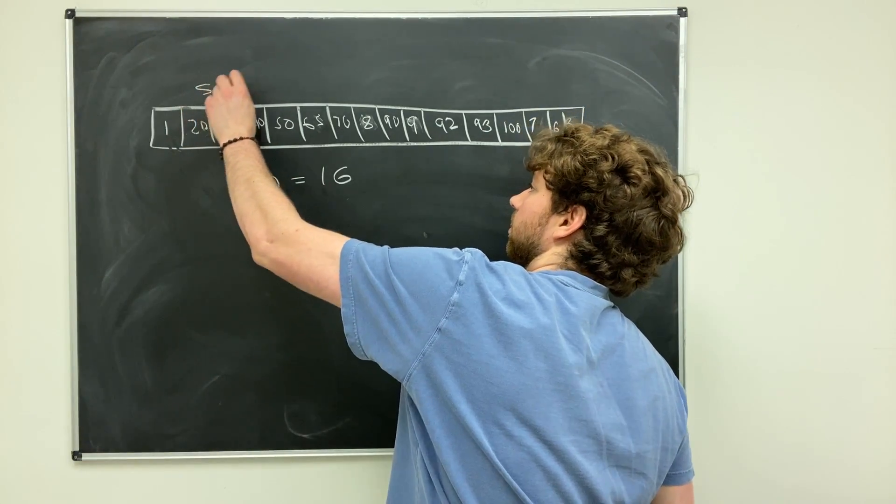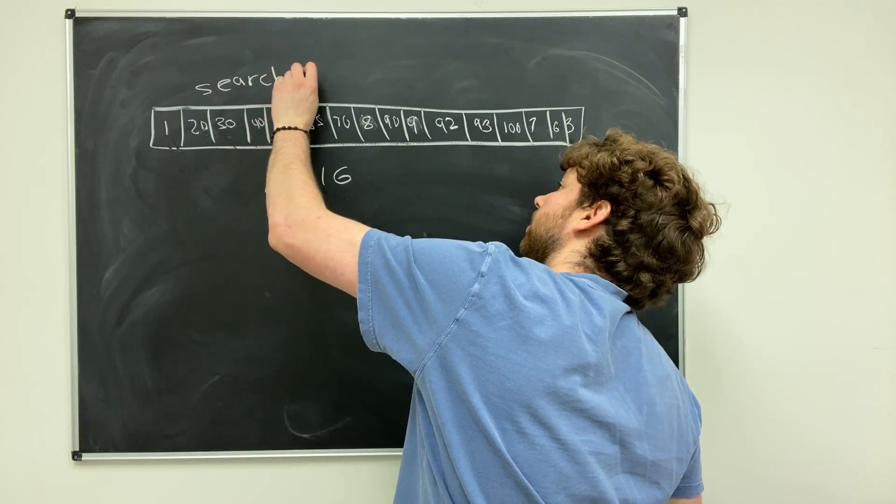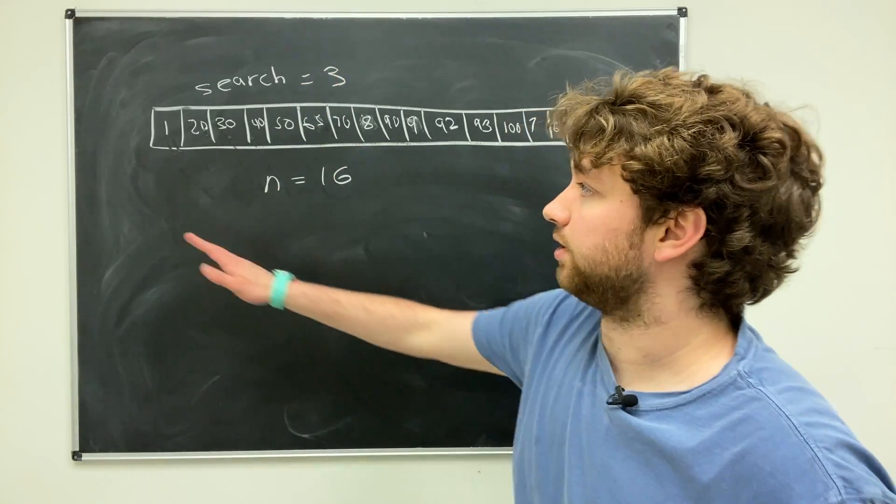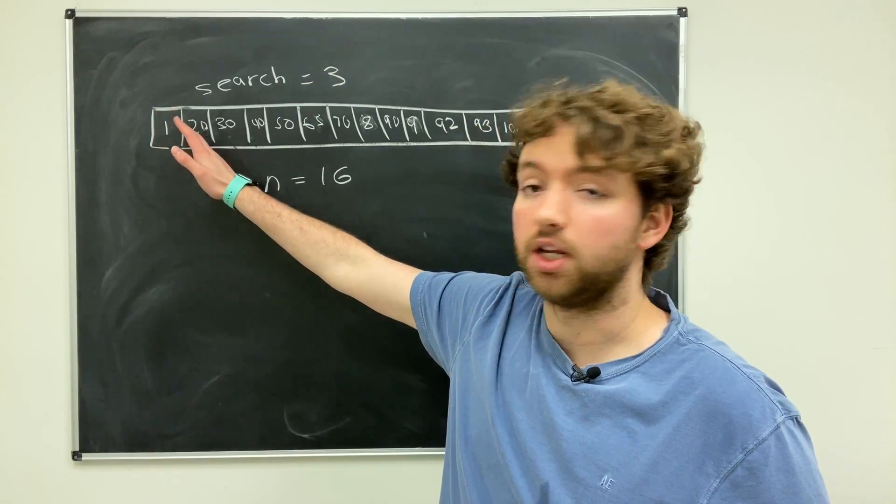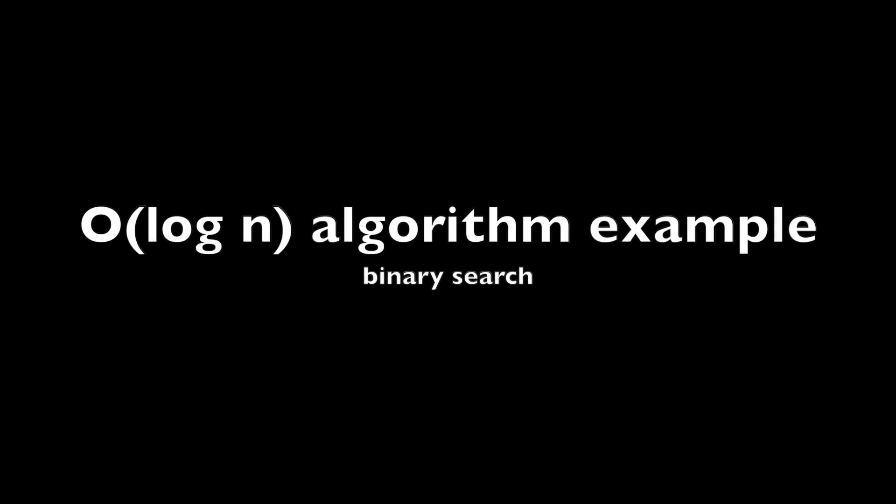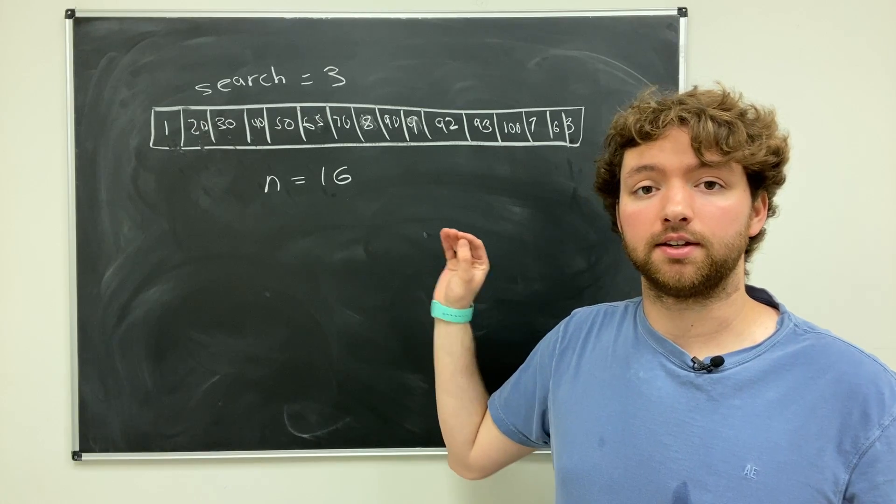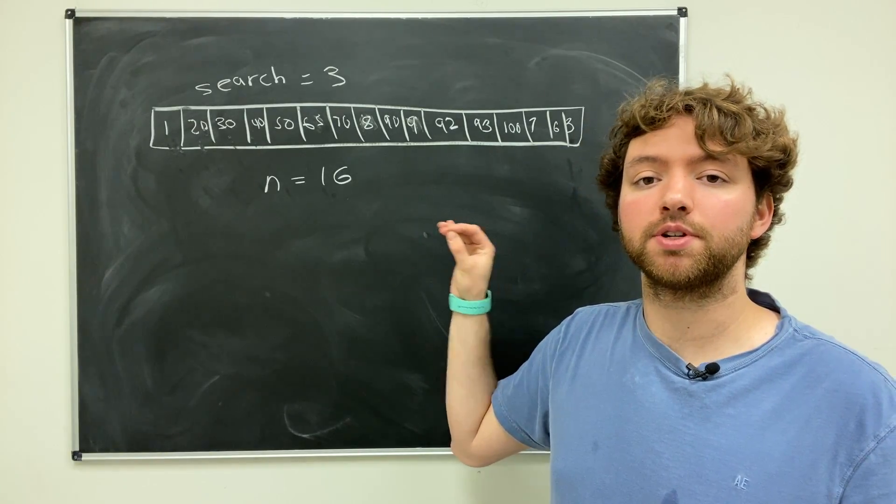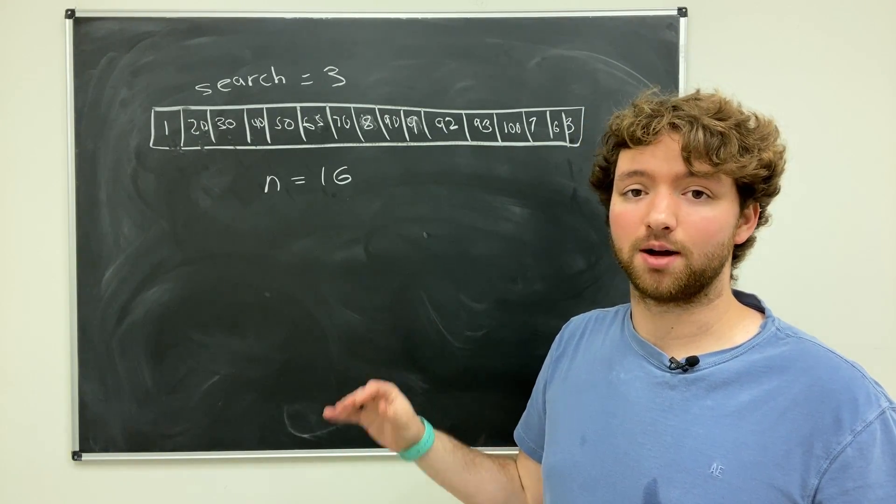So if we're searching for three, it's going to check for three. Nope. Three. Nope. Keep going. 16 times. This is not what we wanted to talk about in this video. This is what we talked about in the previous video, but now let's switch it up.